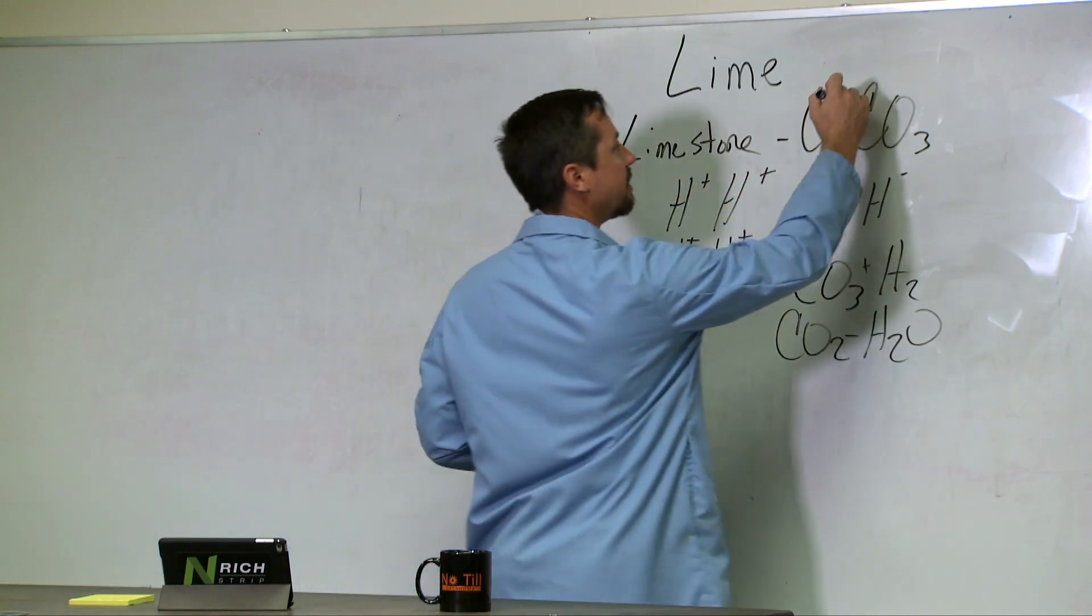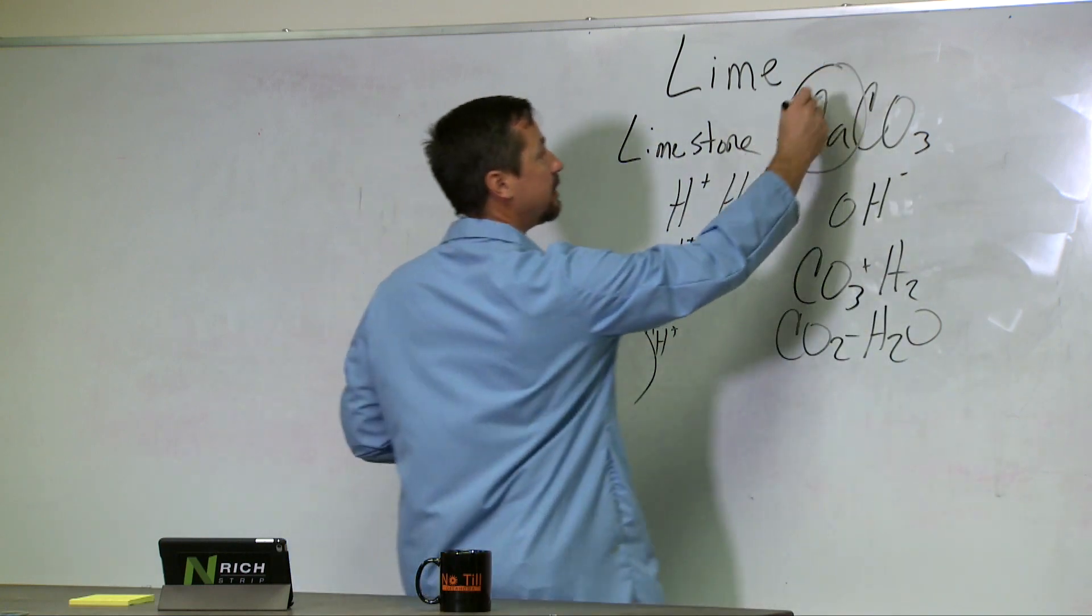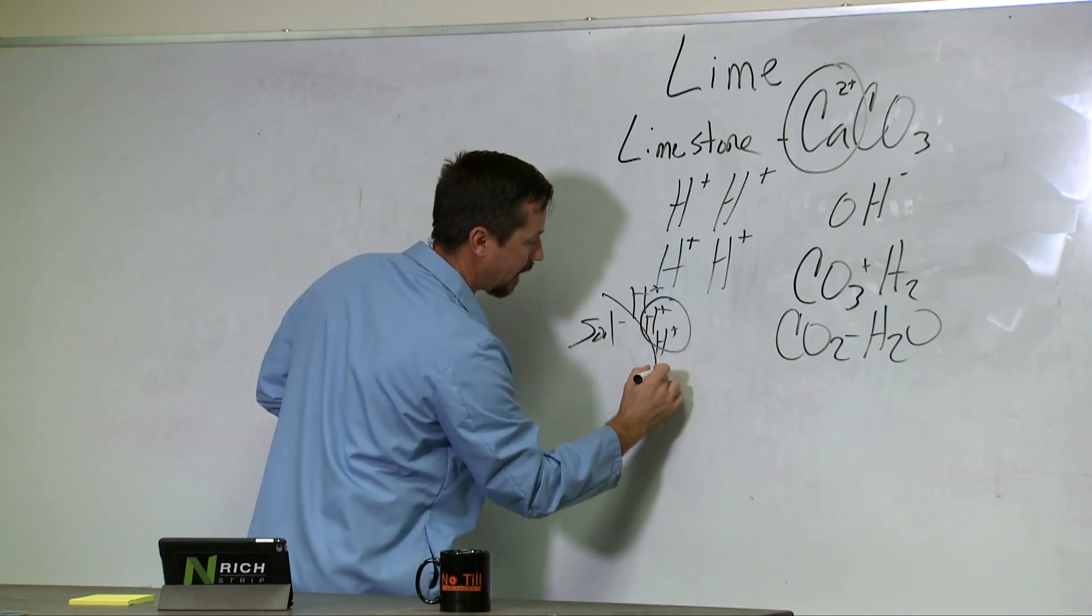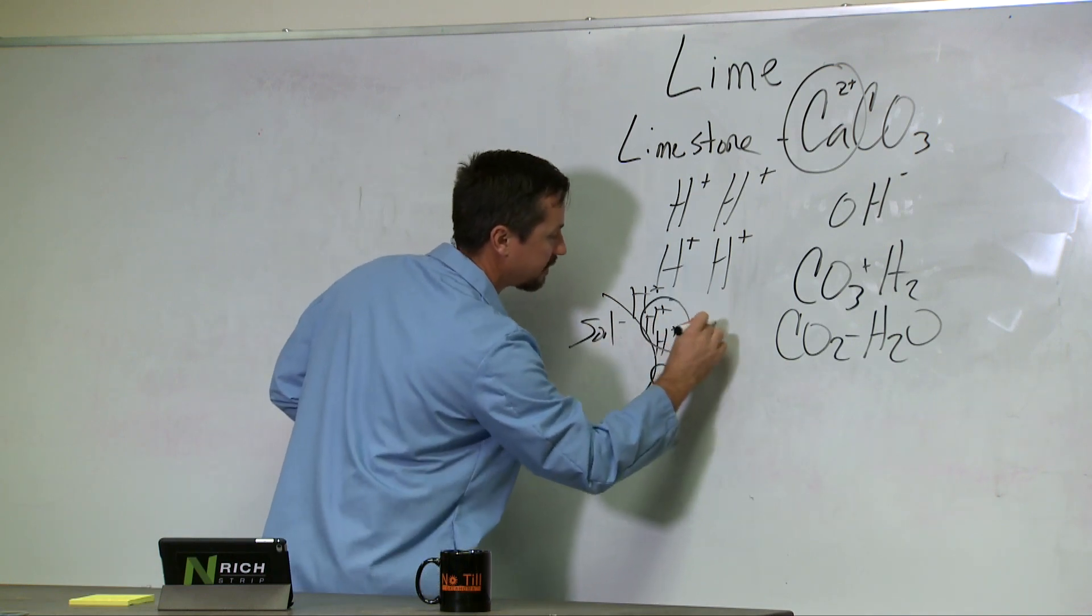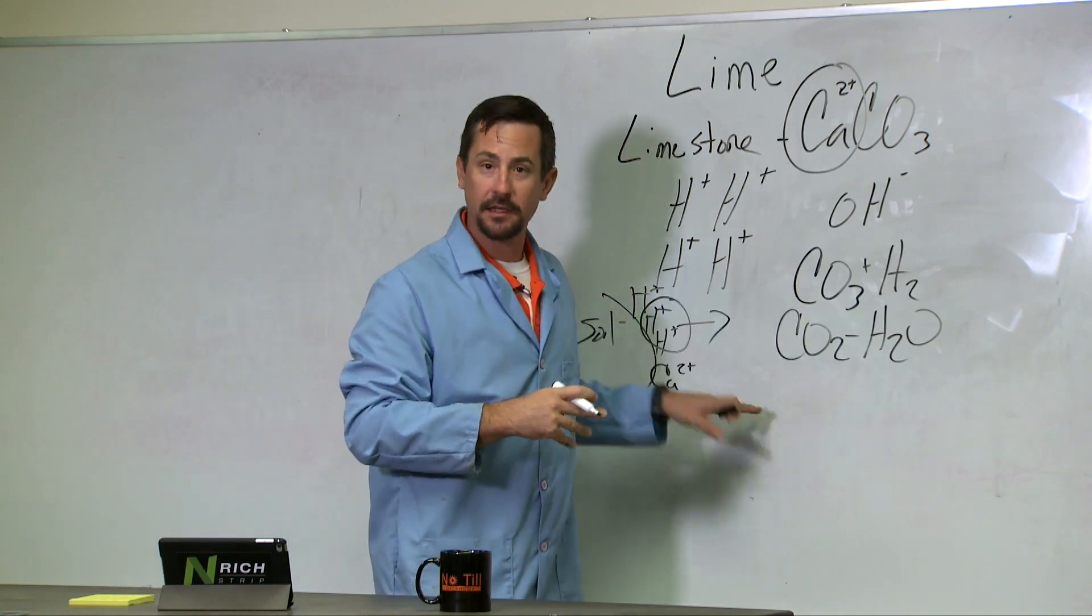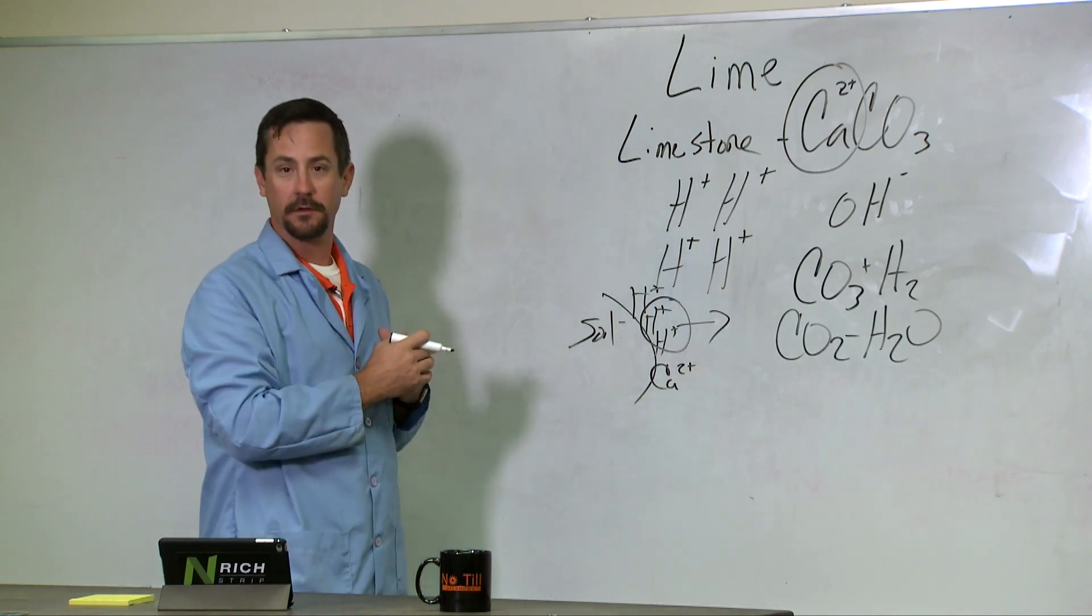Now we put calcium in the system. The calcium part is really important. It's a 2+ and we want it to go in there and kick off hydrogen from the soil surface, kick it out into solution where the carbonate can turn it into water, and we have calcium replaced on the soil particle.